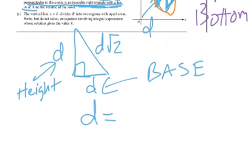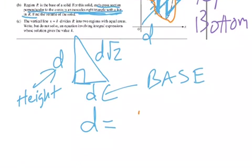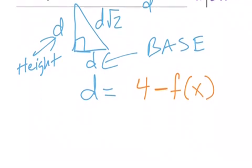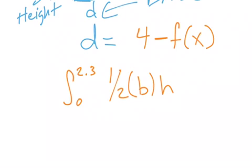Well, the top function is y equals 4, so the top function is 4, and we're going to subtract the bottom function, which I can just denote as f of x. Okay, so all I have to do now is integrate from 0 to 2.3, one-half base times the height, dx.